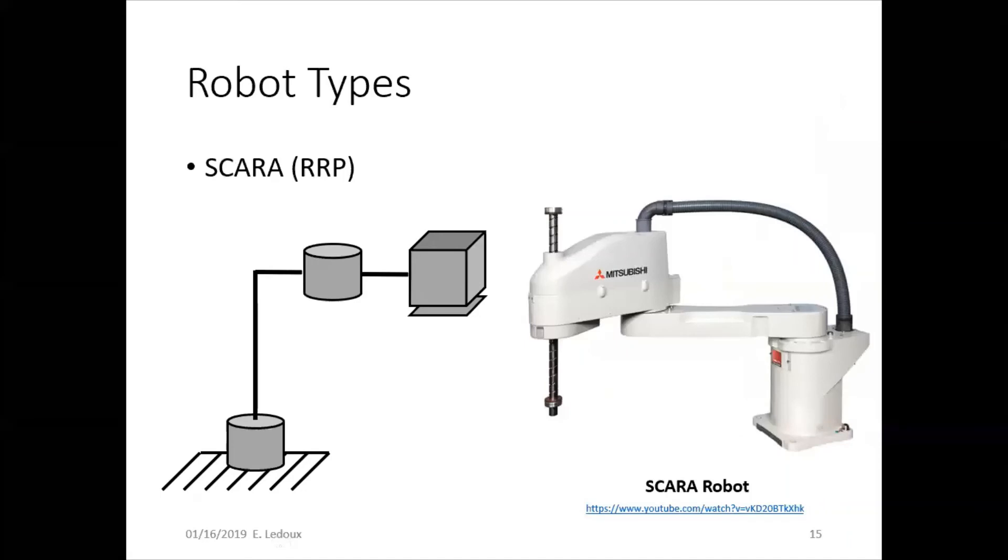A SCARA robot is often used in surgery or for very precise pick and place activities. This one is also an RRP robot, but the joints are offset and in a slightly different position than the one before.